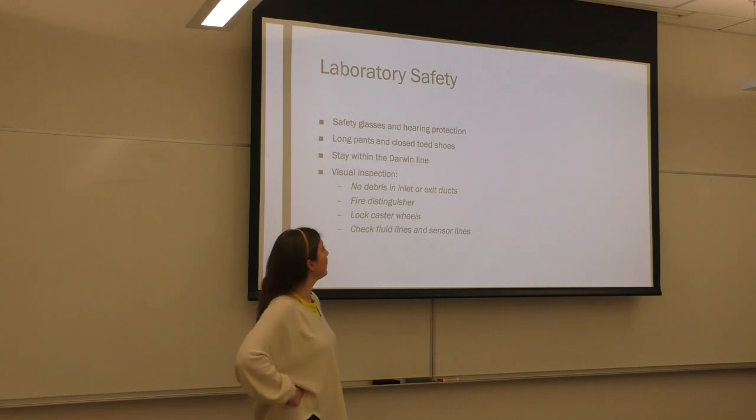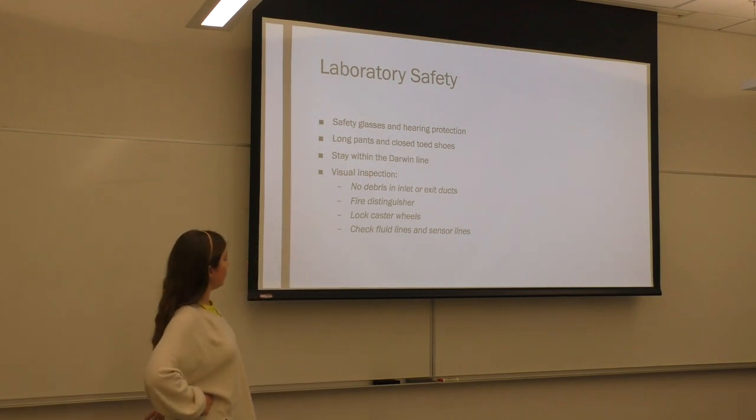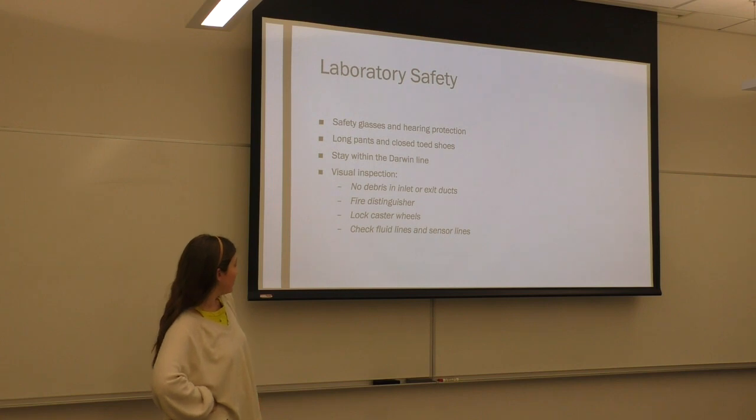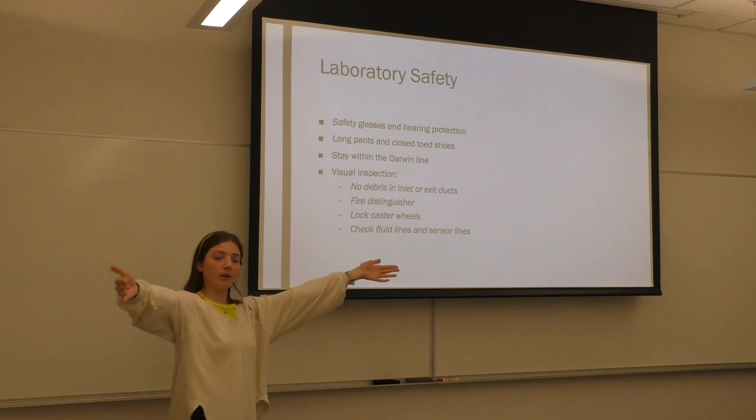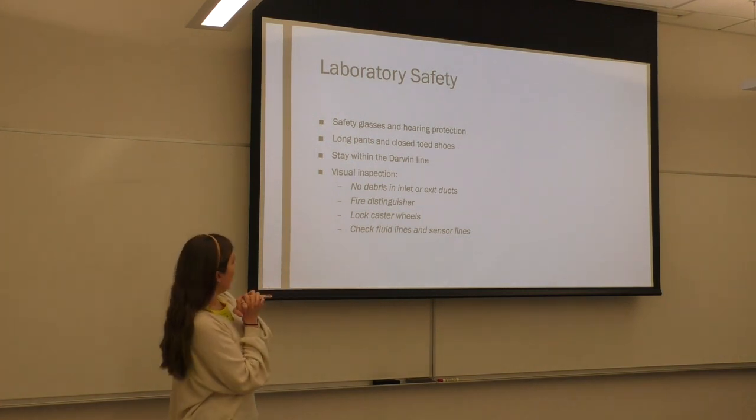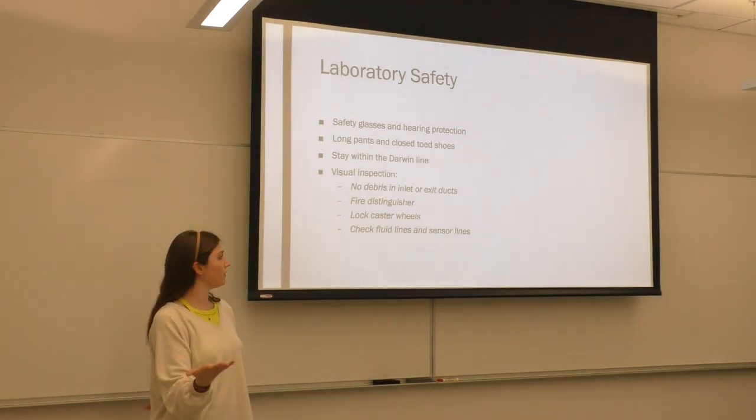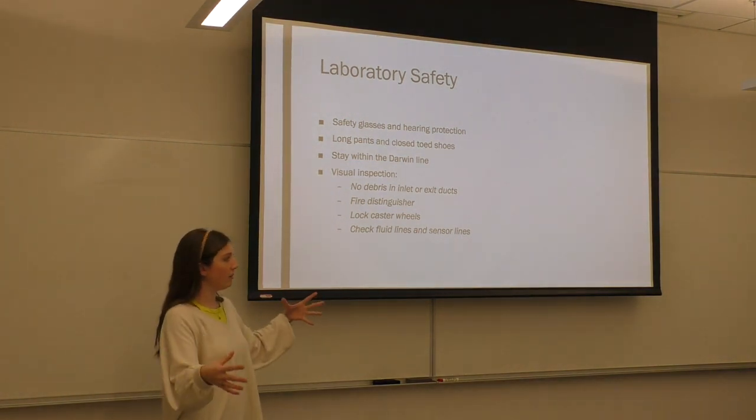Lab safety was pretty big. It took about like half the time. So we needed proper PPE, as always, so safety glasses and hearing protection. And that thing is very loud. Pants and close-toed shoes. Richard has a Darwin line, I'm pretty sure he called it, right? Darwin line, which I mean you don't want to stand by the inlet or the outlet ducts. And then we had to do a visual inspection. So making sure that the inlets and the outlets were free of anything. And then fire extinguisher just in case. And the system had to be locked. And then we had to check the fluid lines and the sensor lines.